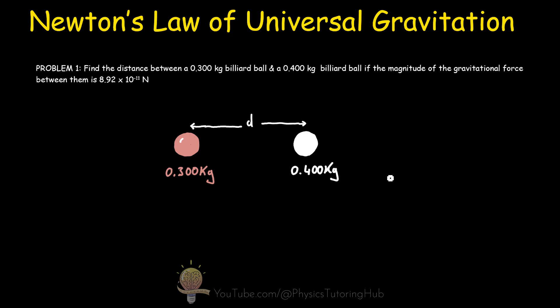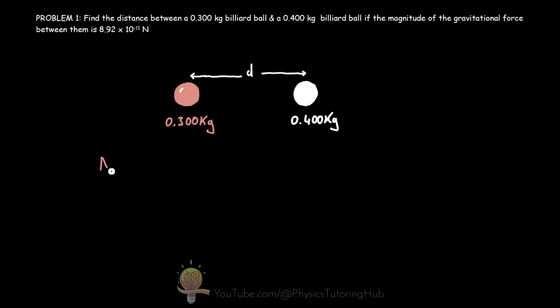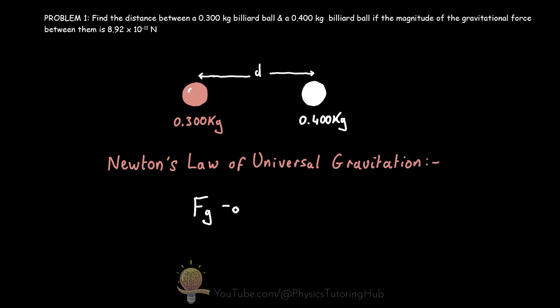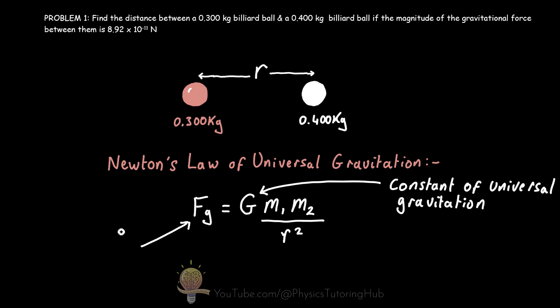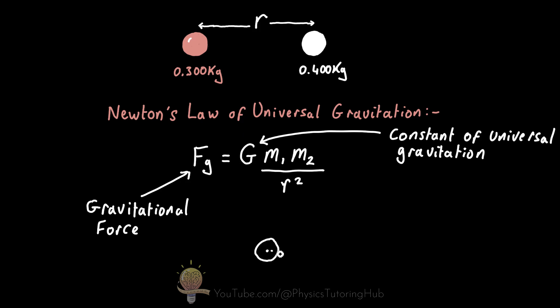Newton developed an equation that provides the magnitude of the gravitational force between two masses separated by some distance, and we call this equation Newton's law of universal gravitation where the gravitational force is equal to the constant of universal gravitation multiplied by the product of both masses divided by the distance between those two masses squared. And this distance here is the distance between the center of the masses.